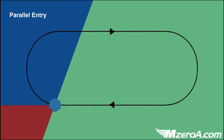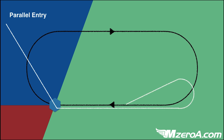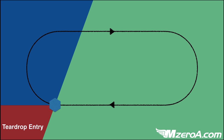Next is the parallel entry, from that bluish-purplish area. We'd come in, hit our point, parallel our course outbound, and then circle back with a left turn to remain as close to that protected side as possible — a parallel entry. And then lastly, our smallest space is the teardrop entry. Coming from that red/maroon area, we'd fly through and over our fix, then teardrop back with a right-hand turn in this case to stay on the protected side to enter into our hold.